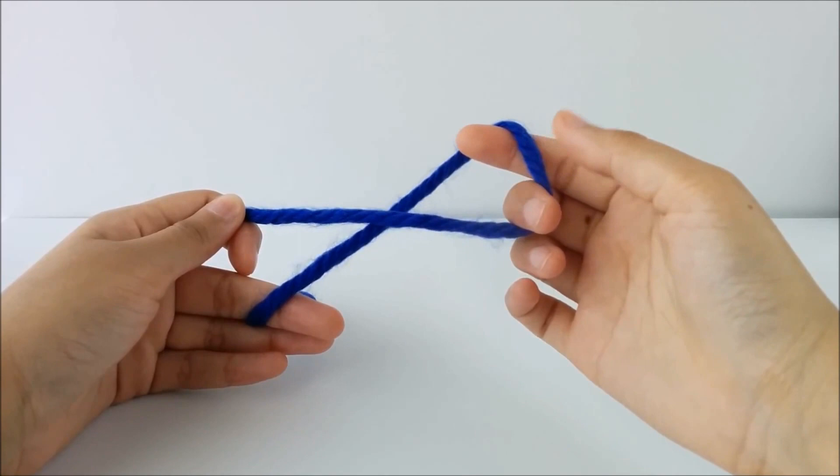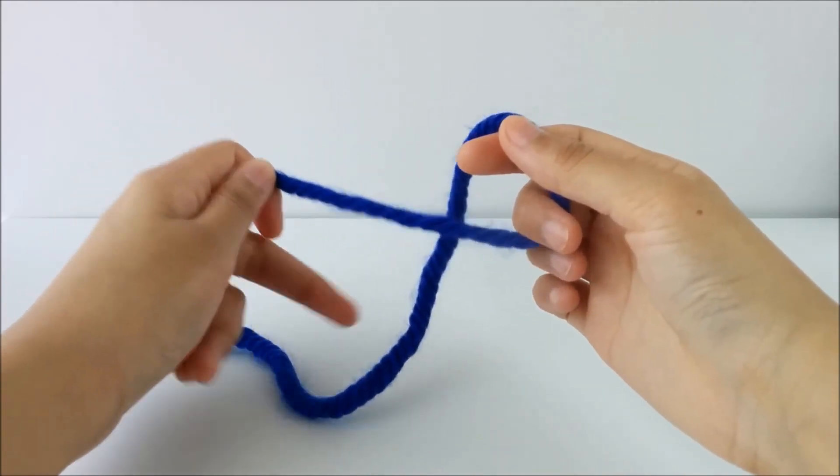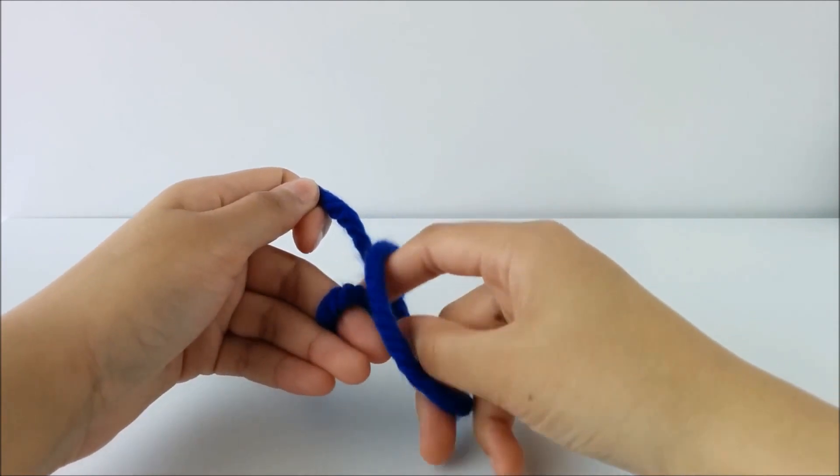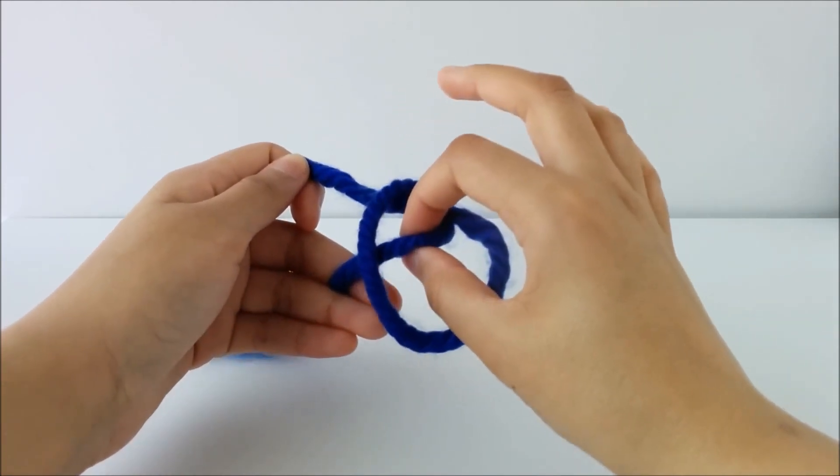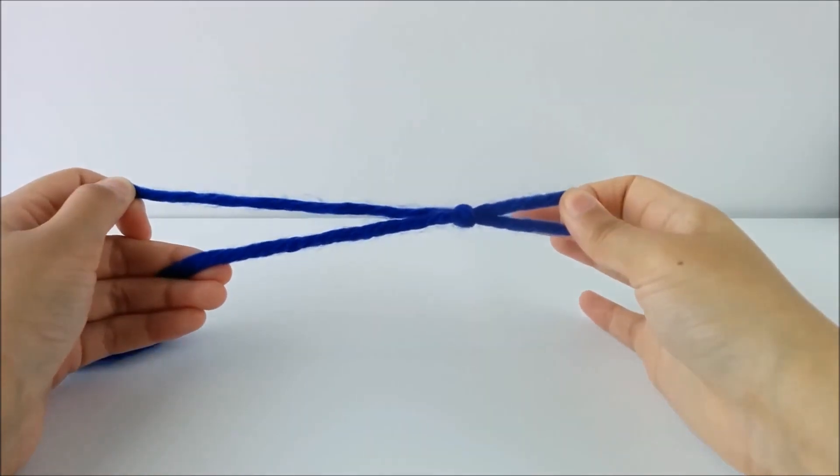Now I take my fingers and I reach through this loop and grab this working yarn. Just reach through, grab the yarn and I can pull the loop through and I have a knot.